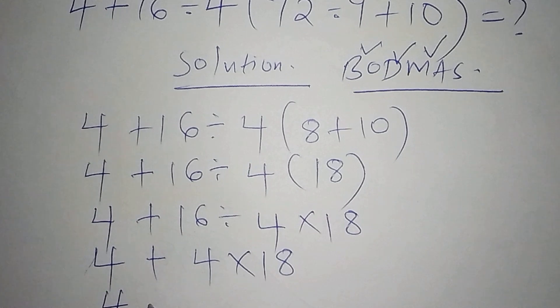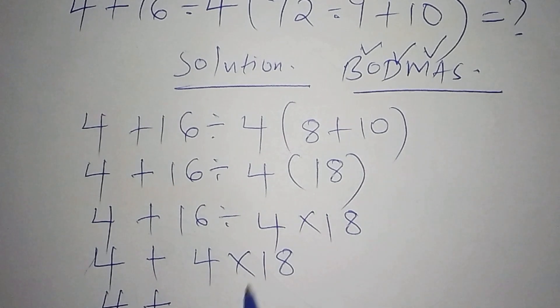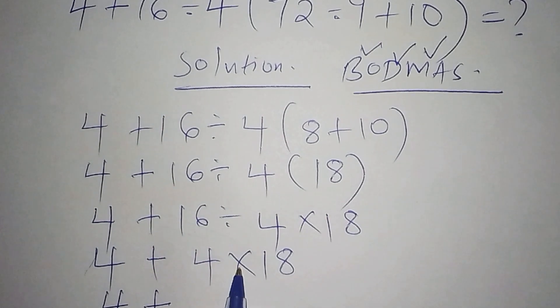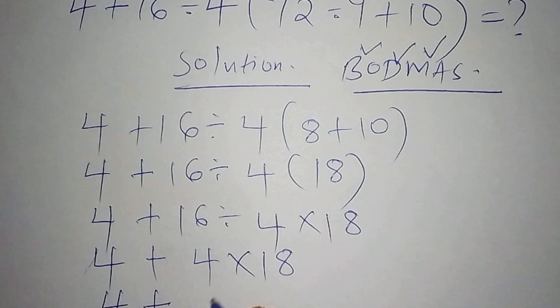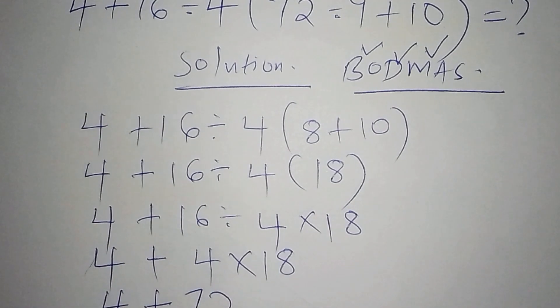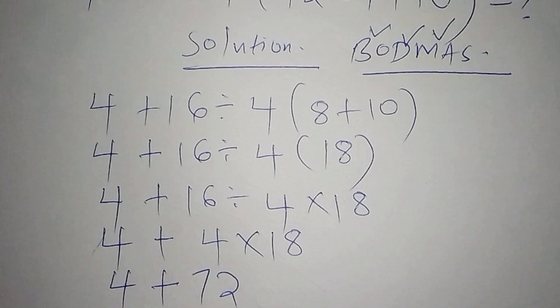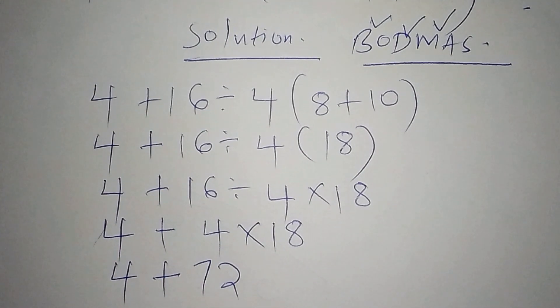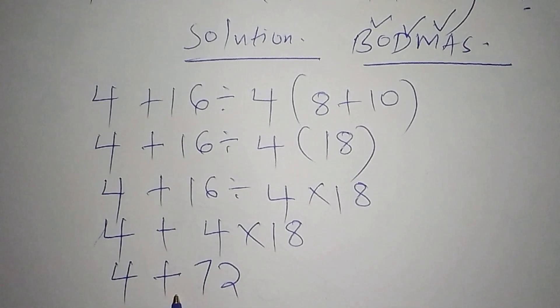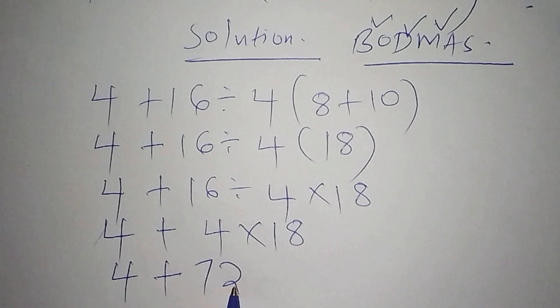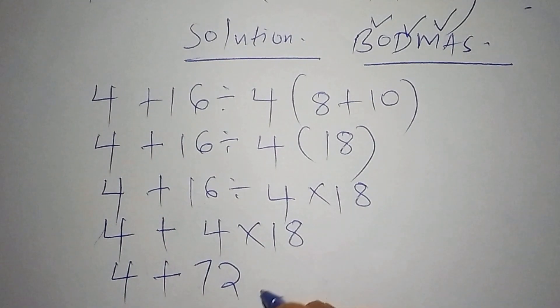We shall have 4 + (we're supposed to work out 4 × 18, which becomes 72). We're heading to the last bit. From here we have 4 + 72, and 4 + 72, our final answer becomes 76. So 76 becomes the correct answer.